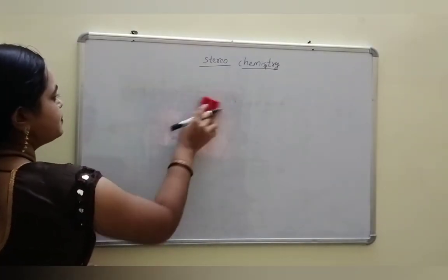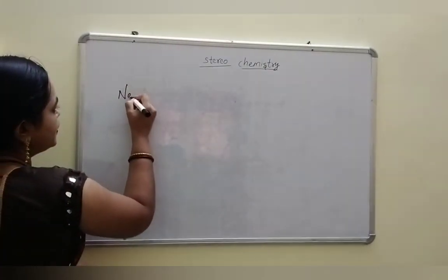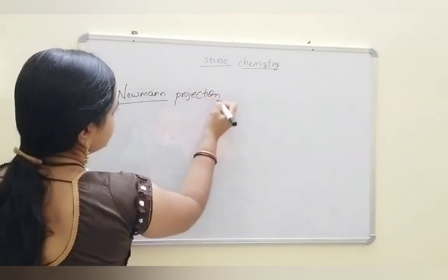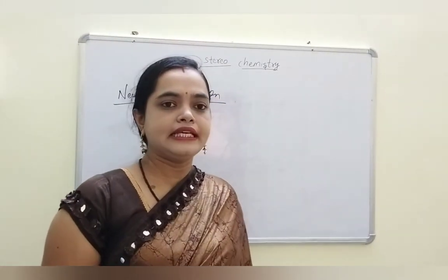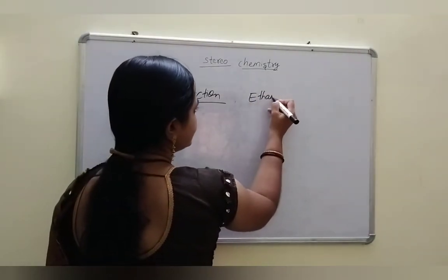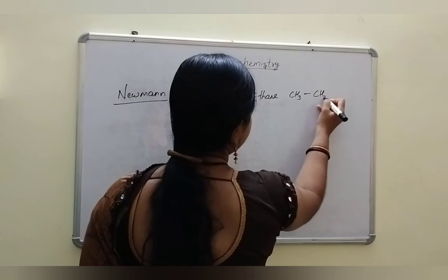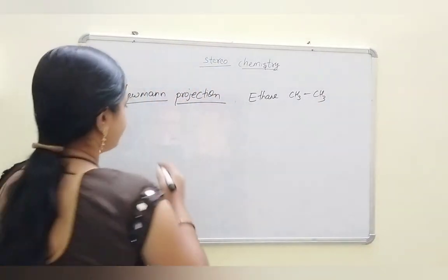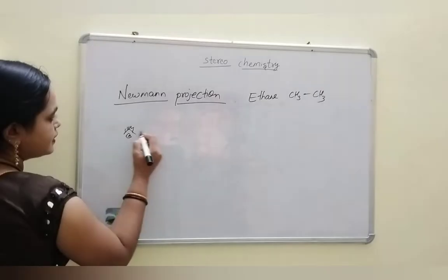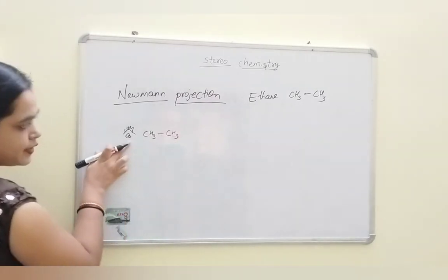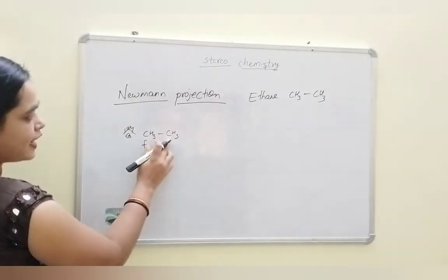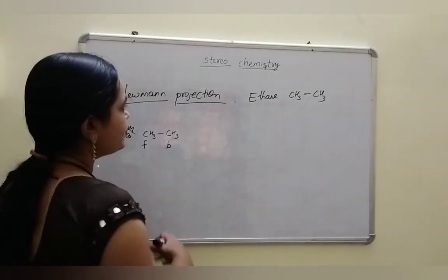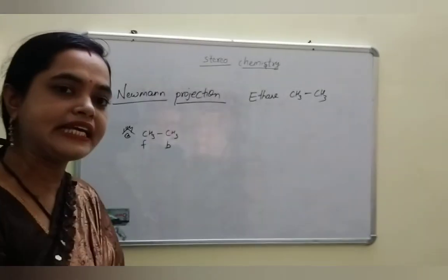The next one is Newman's projection. Let's take an example — ethane, that is CH3CH3. In ethane, this is the front carbon and this is the back carbon. Here is the observer — the carbon nearer to the observer is the front carbon, and the carbon far from the observer is the back carbon. How do we draw the Newman projection for ethane?